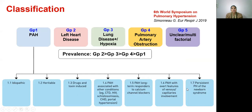Subgroup 1.7 is persistent pulmonary hypertension of the newborn. Though connective tissue disease is classified under group 1, pulmonary hypertension in the setting of connective tissue disease can also be due to other groups. For example, SLE with cardiomyopathy could cause group 2 pulmonary hypertension. Interstitial lung disease in the setting of scleroderma could cause group 3 disease, and pulmonary thromboembolism in SLE could cause group 4.